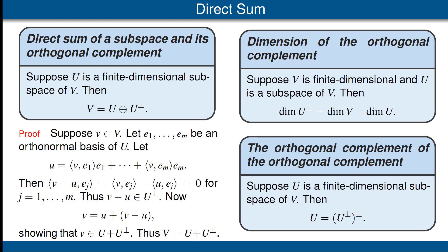Our final result on this slide says that if U is a finite dimensional subspace of V, then the orthogonal complement of the orthogonal complement of U is equal to U. In other words, take orthogonal complements twice for any subspace and you get back to where you started, as long as we start with a finite dimensional subspace. You can see the proof of this result in the book.